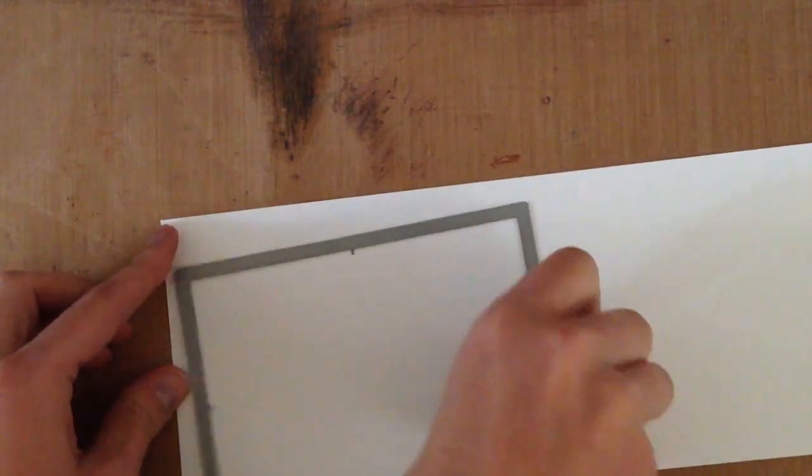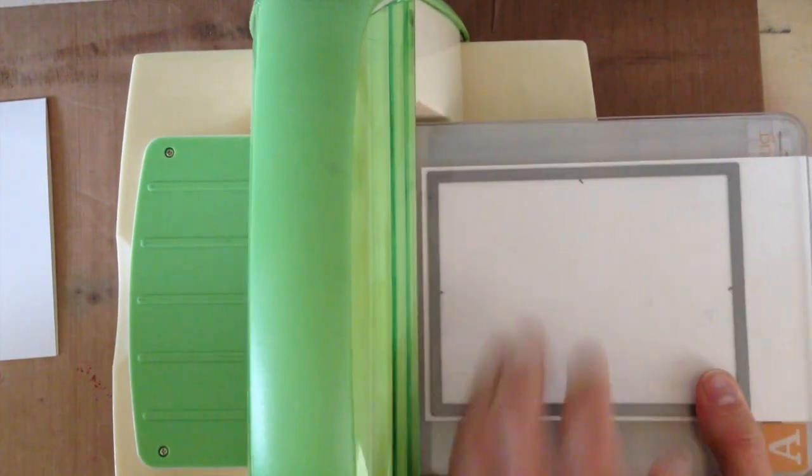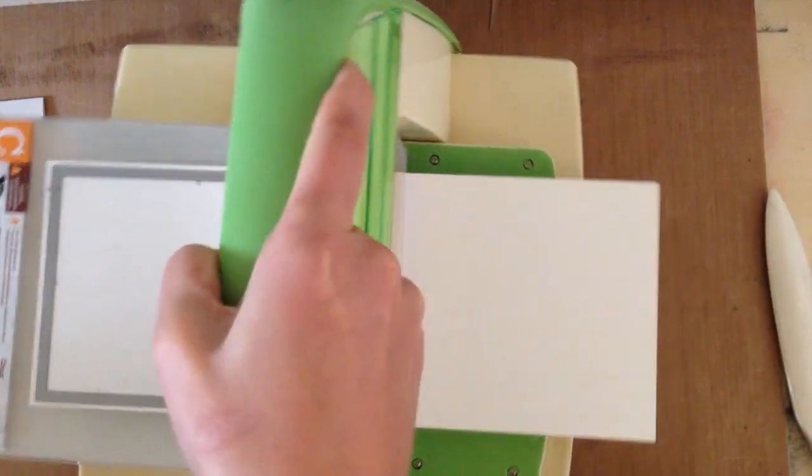The next thing I did was grab a scrap piece of paper, this is 80 pound Neenah Solar White. I used a bit of thinner paper and I'm using the stitch rectangles die from Simon Says Stamp. I'm putting that through my machine and cutting out a stitched border to use as a card panel for the front of the card.